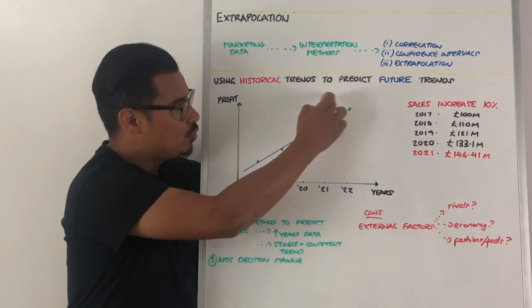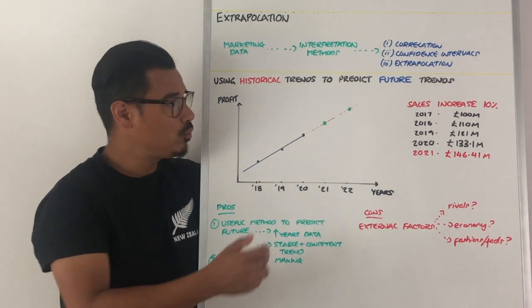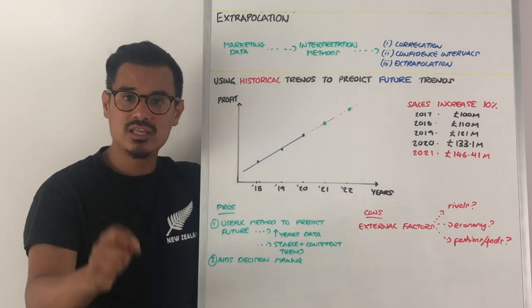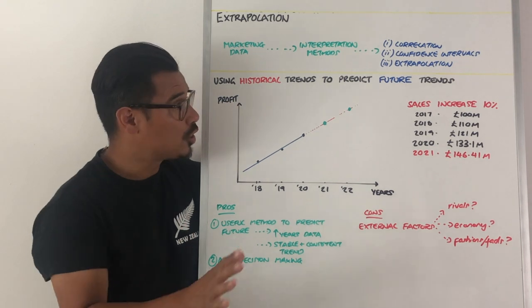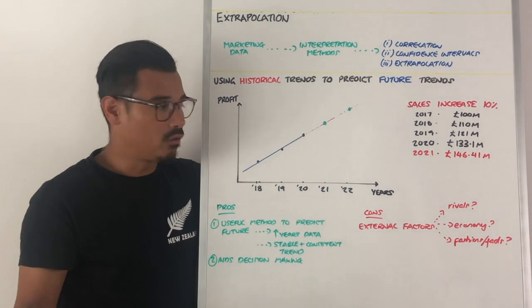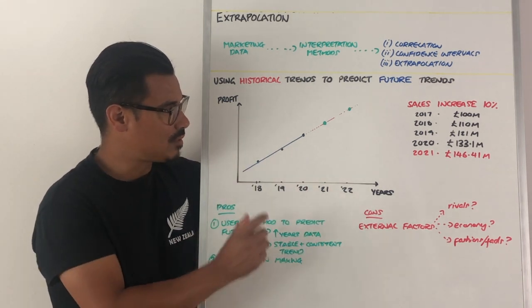Maybe that would continue in the future. We would extend our line of best fit with our red line, and then put the green marks in, and that shows what the future trends could be. That's just a prediction, a forecast. That's one way of doing extrapolation.